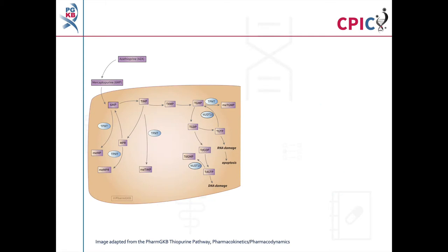This image is a simplified version of the PharmGKB thiopurine pathway. A link to the original pathway is provided in the description below this video. Azathioprine is a pro-drug of mercaptopurine and is used to treat a number of malignant and non-malignant diseases. Azathioprine is converted to mercaptopurine in the body, which is then extensively metabolized in cells to ultimately form active thioguanine nucleotide metabolites. These active thioguanine nucleotide metabolites are cytotoxic.